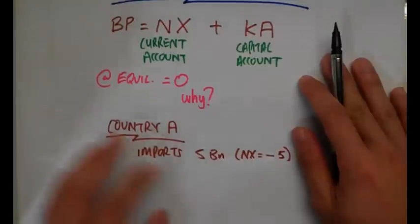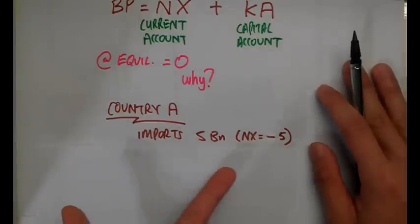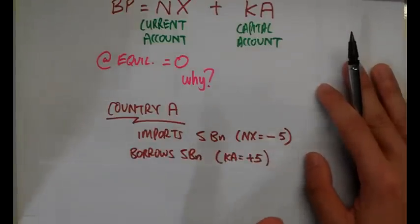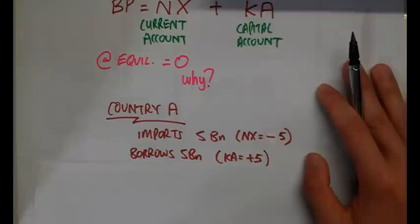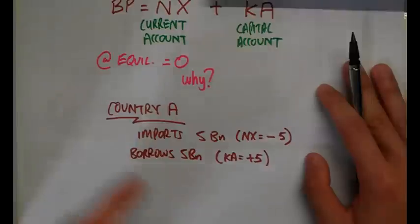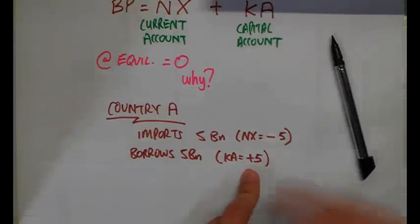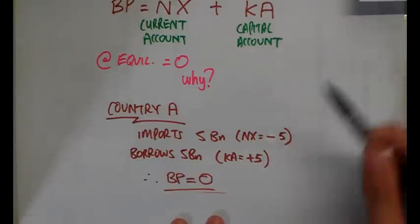For example, if country A wants to import five billion dollars worth of goods and services, net exports will be negative five billion. To pay for this, the country has to borrow — say, five billion dollars from the rest of the world, attracting lenders with high interest rates or by selling bonds to other countries. This causes money to flow into the economy, so the capital account will be in a surplus of plus five billion.